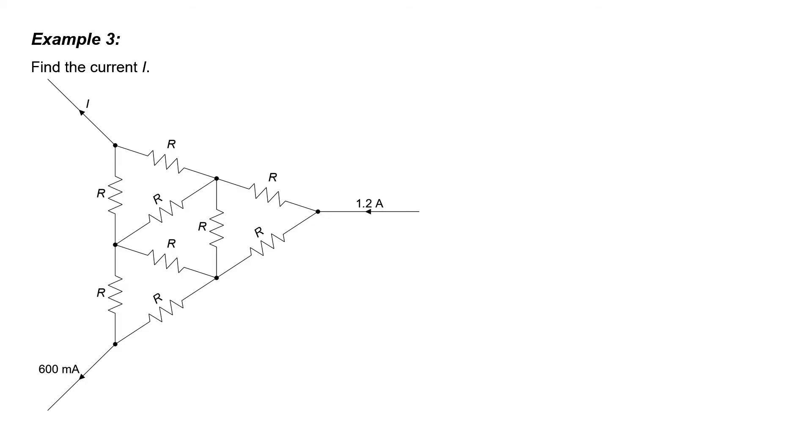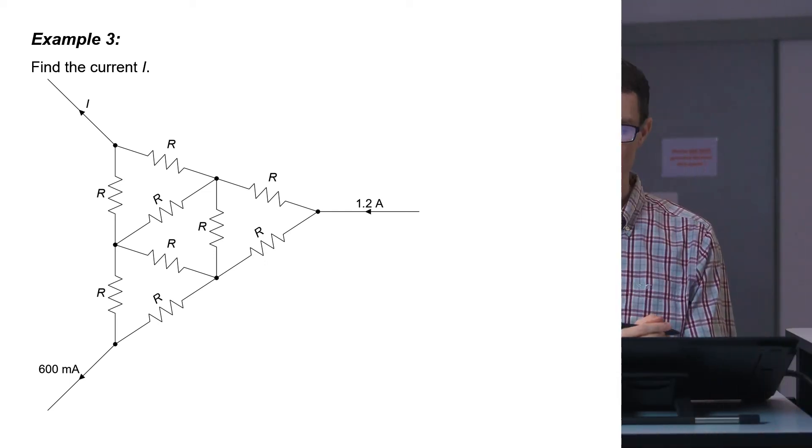Let's take a look at a more complicated example. Here we have 9 resistors and we're not told what the resistors are, but we're told that 1.2 amperes flows along this line, 600 milliamp flows along this line, and we're tasked with finding the current coming out of this mess of resistors. How are we going to do it?